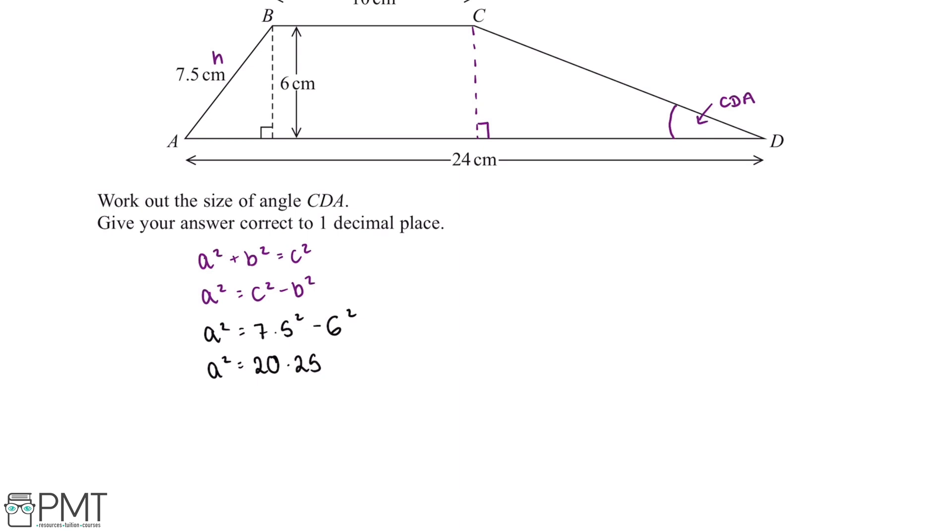So the final thing we need to do to work out this length is square root both sides of the equation. And this tells us that A is equal to 4.5. So therefore the base of this triangle is 4.5 cm.